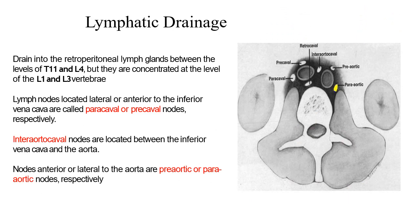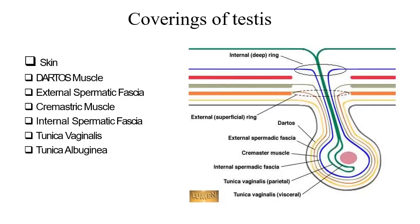Read the anatomy of the pampiniform plexus in detail because you will need to understand the pathogenesis of varicocele. The lymphatics of the testes drain into the retroperitoneal lymph nodes between the levels of T11 and L4, concentrated more at L1 to L3. Nodes lateral or anterior to the inferior vena cava are called paracaval or precaval nodes respectively. Interaortocaval nodes are located between the inferior vena cava and the aorta. Nodes anterior or lateral to the aorta are preaortic or paraaortic nodes respectively.